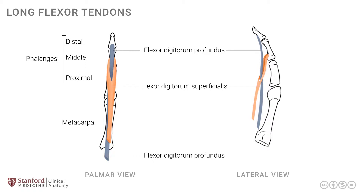This arrangement is important because oftentimes one is faced with a situation where a patient has a laceration over the palmar side of the finger. In those circumstances, it is important to make a clinical assessment as to whether the FDS, the FDP, or in fact both of these tendons have been cut. There are some simple clinical maneuvers by which one can differentiate and make a good clinical diagnosis.